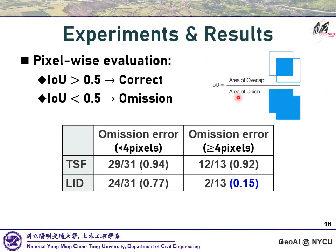The IOU index was used for evaluation. If IOU is greater than 0.5, a landslide is considered detected; otherwise, an omission occurred. We also analyzed the relationship between different landslide areas and omission error. For landslides smaller than 4 pixels in Landsat 8, omission error for both methods was high. For landslides larger than 4 pixels, the omission error for TSF is 0.92, while for Lead it is 0.15. Overall, TSF performs poorly regardless of landslide area, whereas Lead's discriminative ability is much better than TSF in large landslide areas.